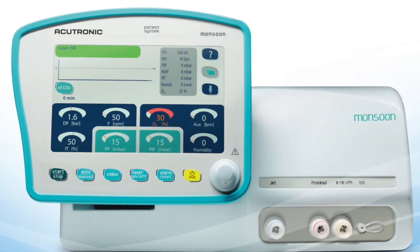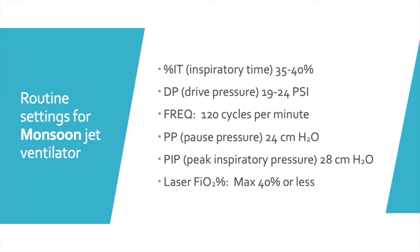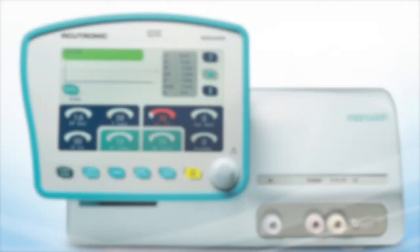A better solution is a jet ventilator — here at UCLA we have a brand called the Monsoon. These are the basic settings for an adult patient. Rarely will you need anything different unless, for example, the patient is morbidly obese and requires higher driving pressures, or has severe bronchospastic disease requiring more time for exhalation and a prolonged I-to-E ratio. You set inspiratory time, driving pressure, frequency of breaths, the pause pressure — which is very important — the peak inspiratory pressure, and the desired FiO2. If the surgeon is going to use laser, there's also a laser on/off button to instantly reduce the FiO2, which you press again when you want to resume higher oxygen flow. Note that inhalational anesthesia is not an option with jet ventilation, so you'll need to convert to TIVA with your choice of medications.